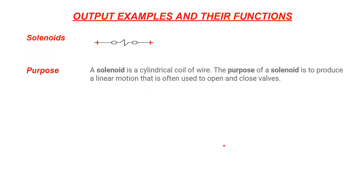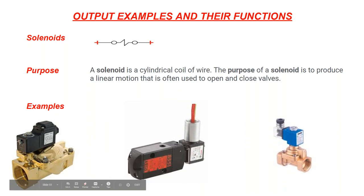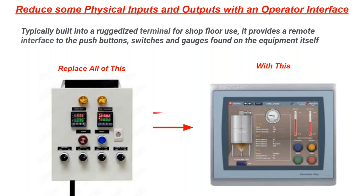Solenoids are another output example. A solenoid is used on something like a solenoid valve — a way to turn on a pneumatic or other type of valve. The operator interface can consolidate all these inputs and outputs. Instead of having separate meters, selector switches, buttons, and signaling devices — all requiring extra wiring — an operator interface gives you that flexibility while reducing wiring costs.